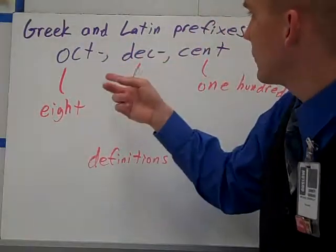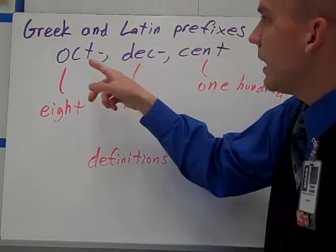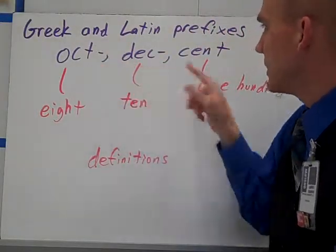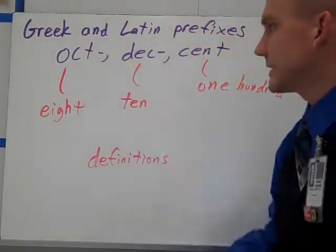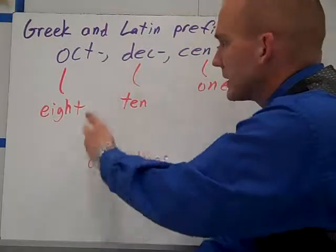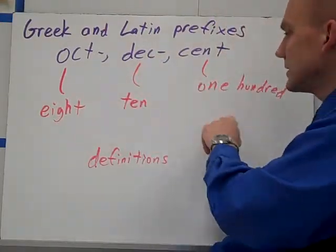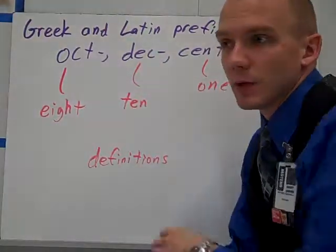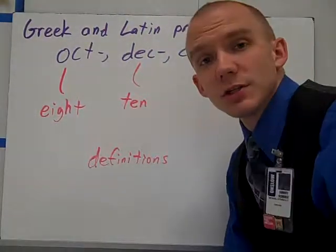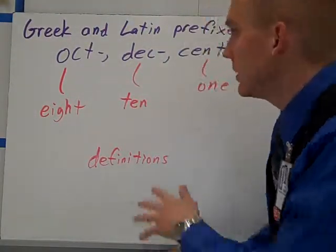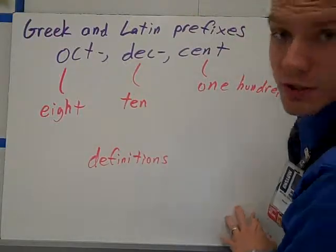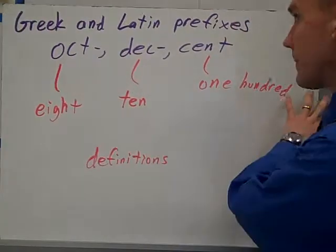In Greek and Latin prefixes, OCT, DEC, and CENT. OCT is 8, DEC is 10, and CENT is 100. We're going to look at some definitions of common words using these prefixes.